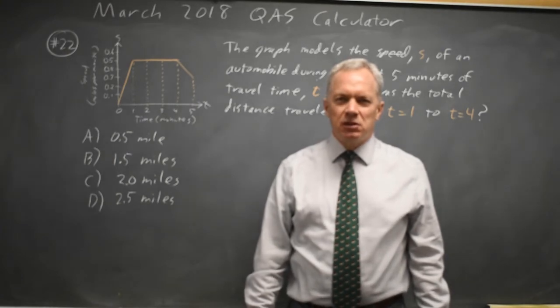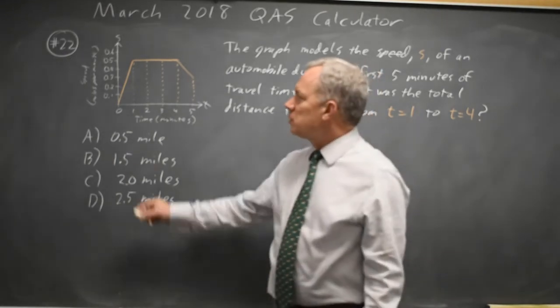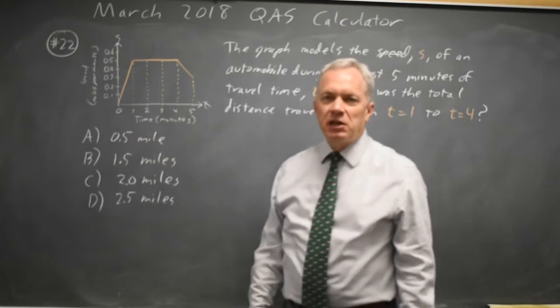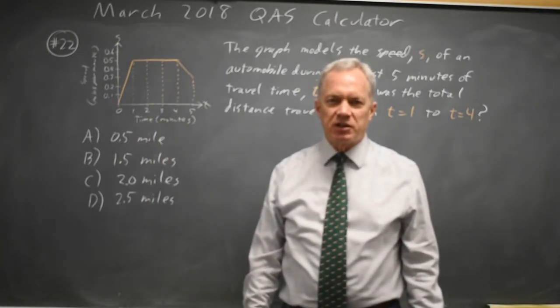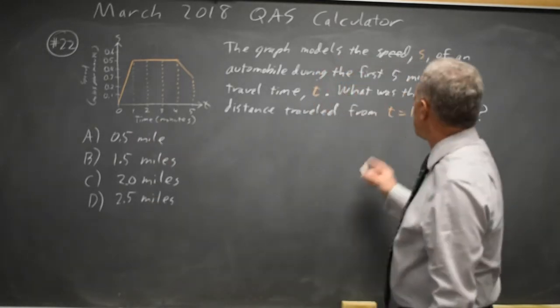This is question 22. College Board gives us a graph with speed versus time and asks for the total distance traveled from time 1 to time 4.